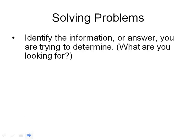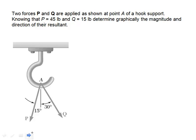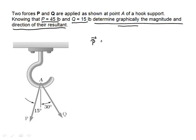The next step: identify the information or answer you are trying to determine — otherwise stated, what is it we are looking for? This problem says we want to determine graphically the magnitude and direction of their resultant. Graphically means we are actually going to draw these quantities at the proper vector direction. P is 45 pounds and Q is 15 pounds, so the resultant is vector P plus vector Q. We need to add these two vectors together, and to do so graphically we have to keep in mind how we add vectors graphically.